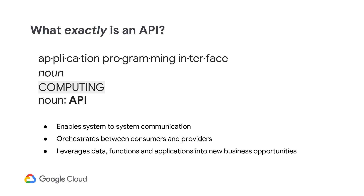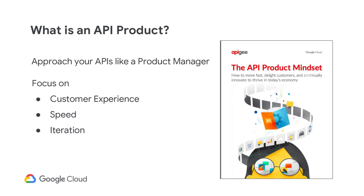Now that you have the formal definition, you are probably asking yourself, how does this affect my business? In the next few slides, we will discuss a recommended approach to designing your APIs, making it easier for the developer to discover and begin using your APIs in order to implement their application with speed. So now you may ask, what is an API product and why is it important to my business?